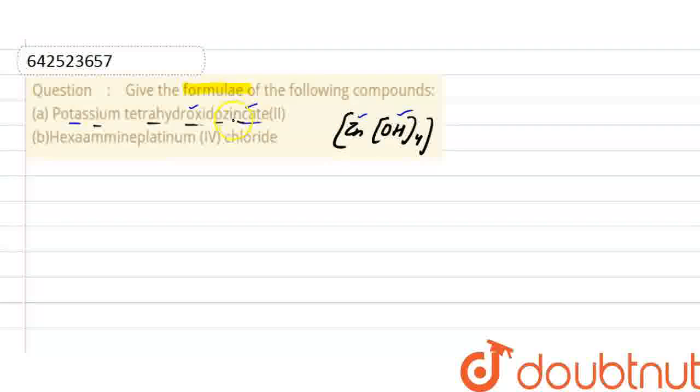So, here the oxidation state of zinc is given, that is +2. As OH, that means hydroxide is a negative ligand and has the oxidation number -1. So here it is -4. So charge on the complex here is -2.